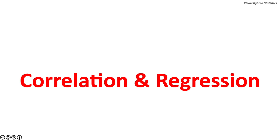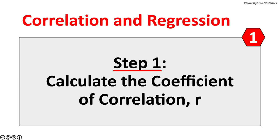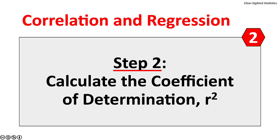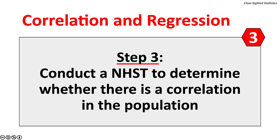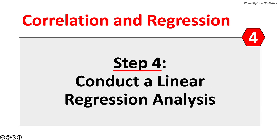Correlation measures the degree of association between the independent variable X and the dependent variable Y. Regression predicts changes in the dependent variable Y based on changes in X. There are four critical steps: Step 1, calculate the coefficient of correlation. Step 2, calculate the coefficient of determination, R-squared. Step 3, conduct a null hypothesis significance test to determine whether there is a correlation in the population. Step 4, conduct a linear regression analysis.